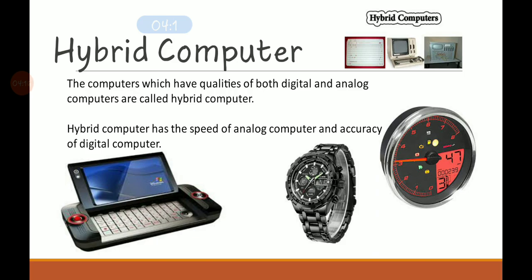Hybrid computers have qualities of both digital and analog signals. A hybrid computer has the speed of an analog computer and the accuracy of a digital computer. So a hybrid computer is the combination of both analog and digital computers, making it more advanced as it has the features of both.